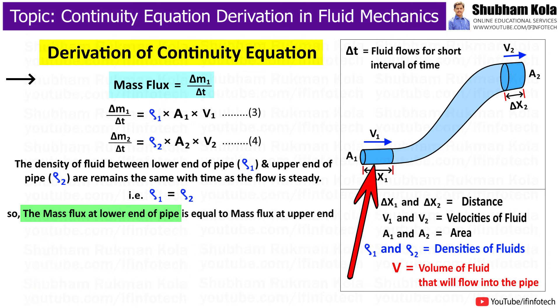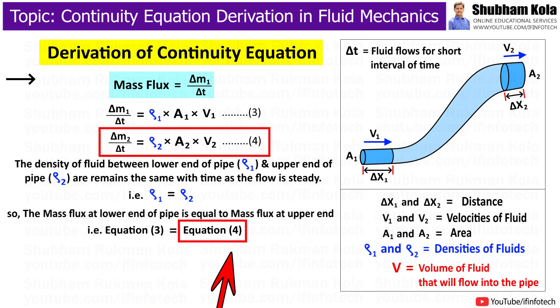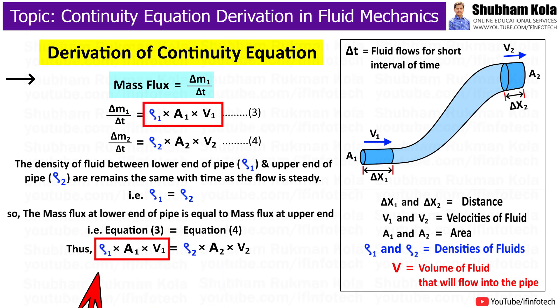So, the mass flux at lower end of the pipe equals the mass flux at upper end of the pipe, that is, equation 3 equals equation 4. Thus, rho 1 times A1 V1 equals rho 2 times A2 V2.